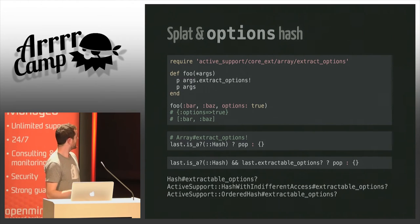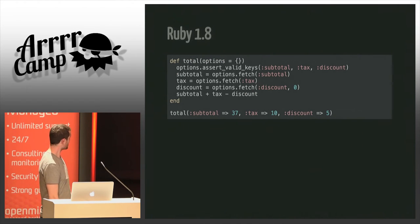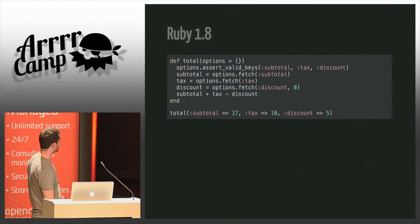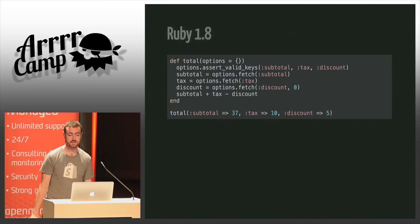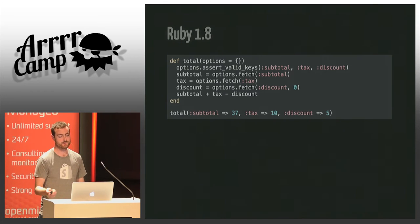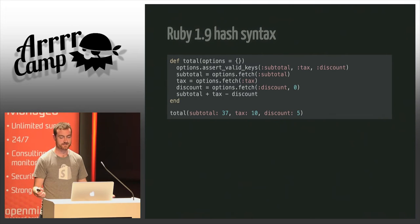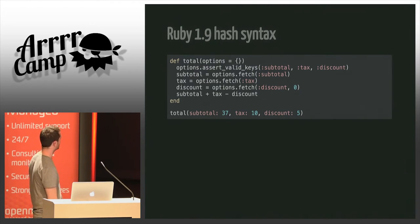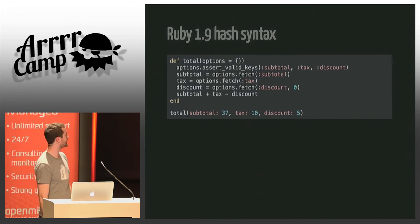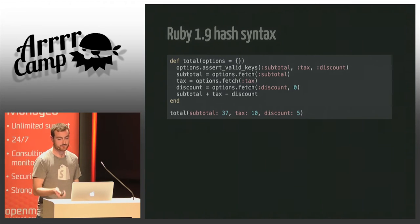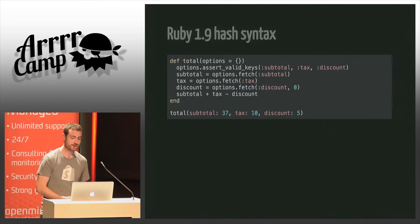Coming back to Ruby 1.8 — this is the same code except using the hash bracket syntax. Ruby 1.9 was really nice: we got the new JSON-like symbol syntax, much nicer on the eyes. But that didn't change anything about the method definition itself — only the method call. This syntax works only when the keys are symbols, which is most of the time what we want.